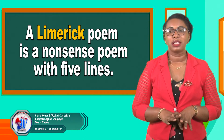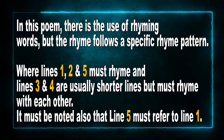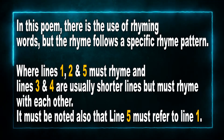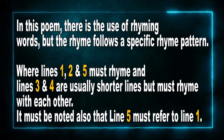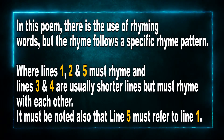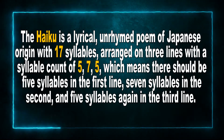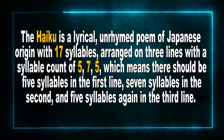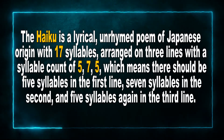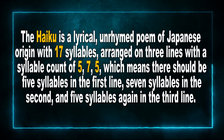Remember, a limerick poem is a nonsense poem with five lines. There is the use of rhyming words, but the rhyme follows a specific pattern where lines one, two, and five must rhyme, and lines three and four are usually shorter but must rhyme with each other. Line five must refer back to line one. The haiku is a lyrical unrhymed poem of Japanese origin with 17 syllables arranged on three lines — five syllables in the first line, seven in the second, and five again in the third.